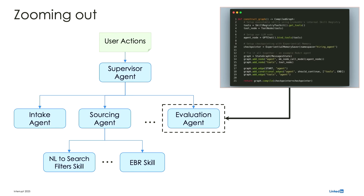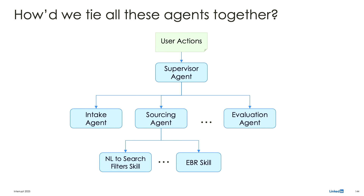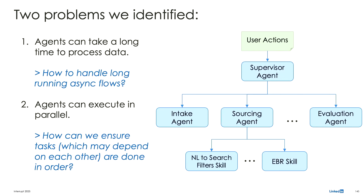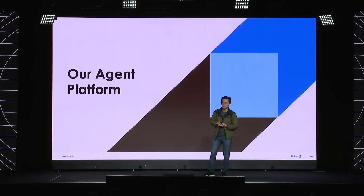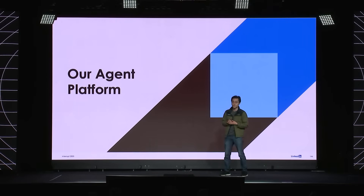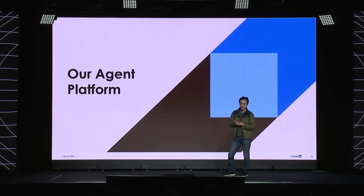Zooming out, recall the earlier diagram. What I've described allows us to build one of these individual agent boxes — but you might ask: how did we actually tie all these agents together? The two problems we identified specifically with agentic setups were: one, agents can take a lot of time to process data, leading into the whole ambient agent idea of how to model long-running asynchronous flows in our infrastructure stack. And second, agents can execute in parallel, and the outputs of one agent might depend on the outputs of another — so how can we make sure things are done in the right order?